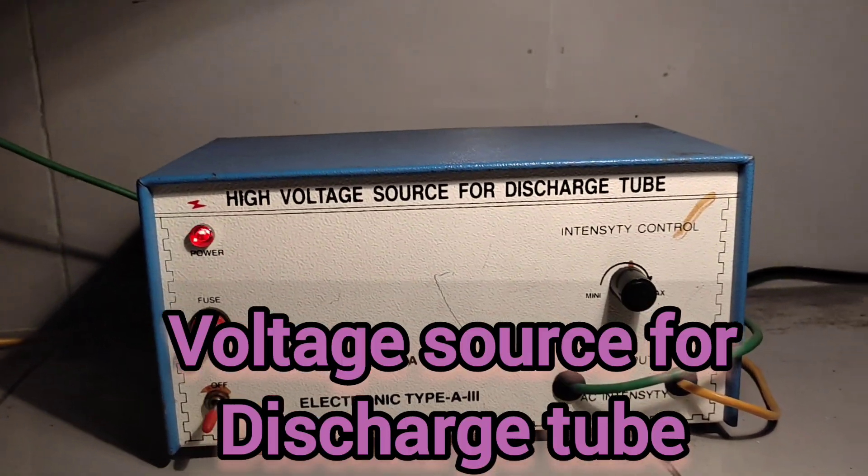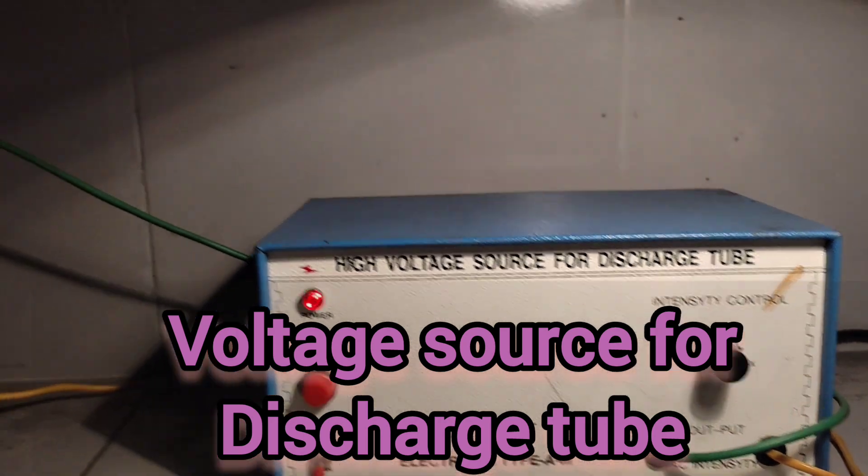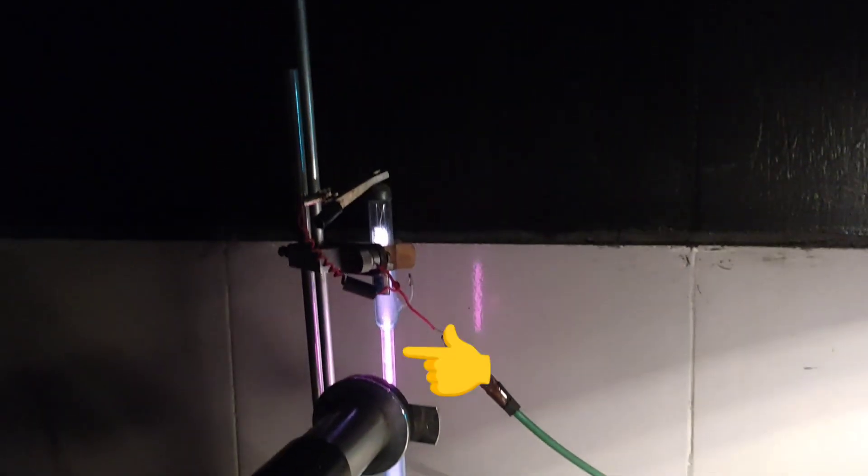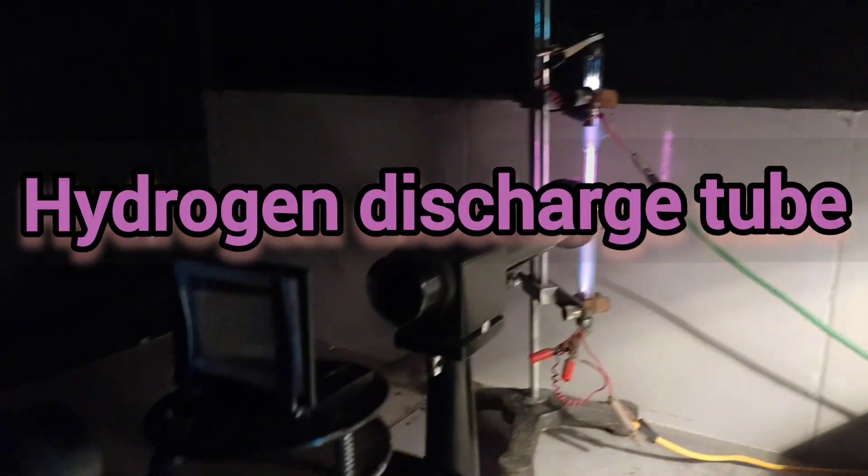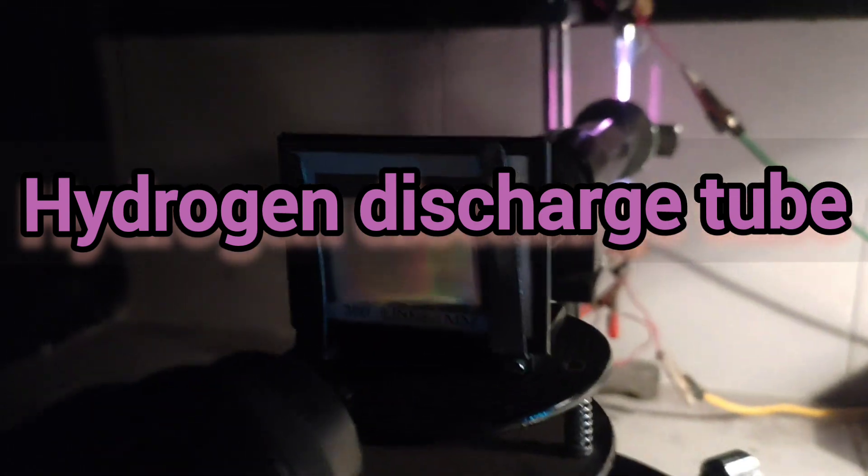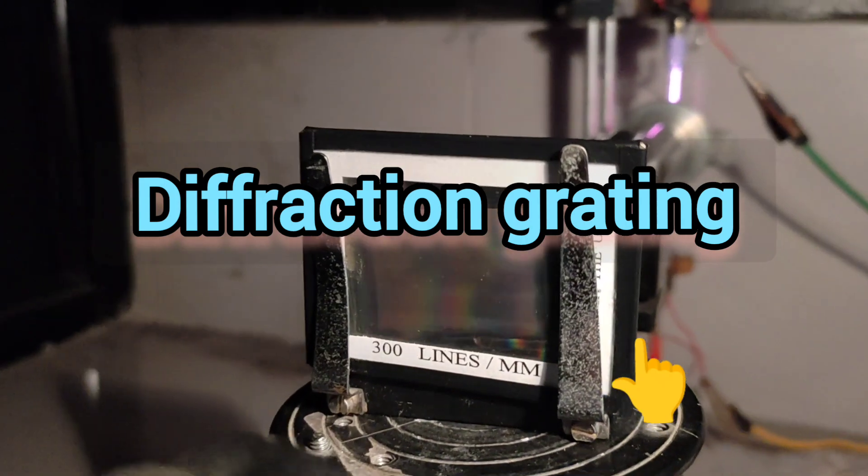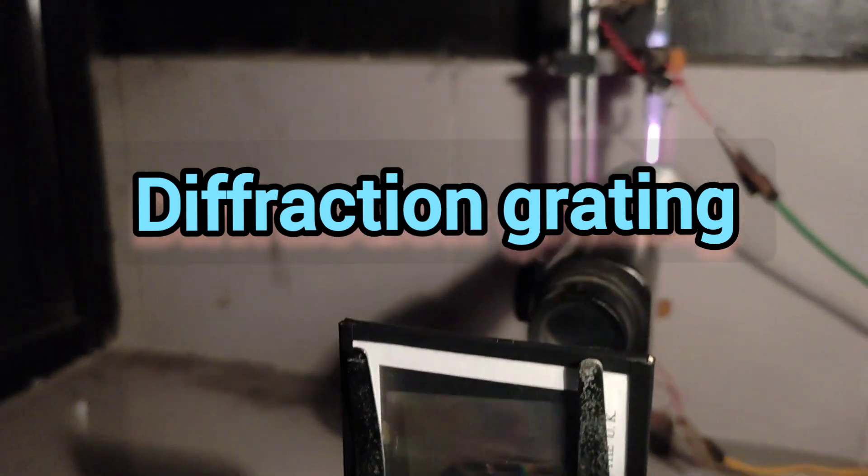This is high voltage source for discharge tube. This one is discharge tube, we are using hydrogen discharge tube. This is called diffraction grating. Here number of rulings are 300 lines per millimeter.